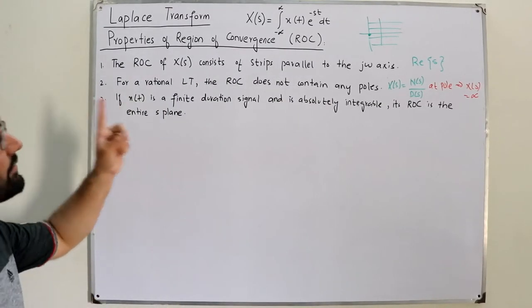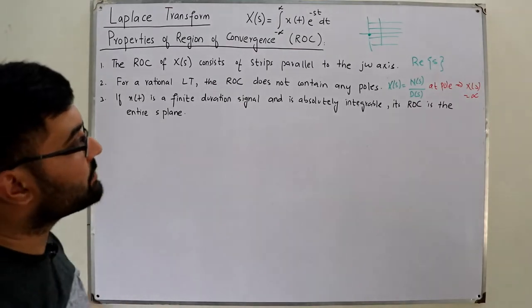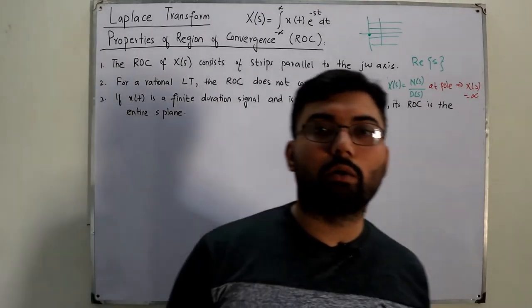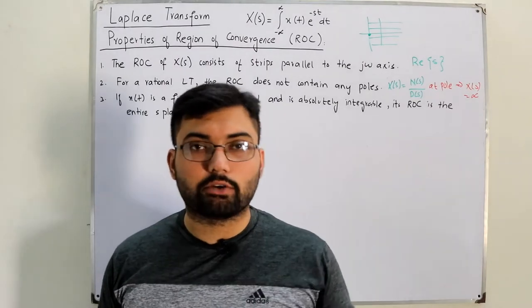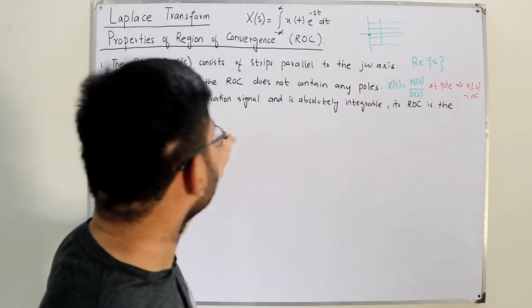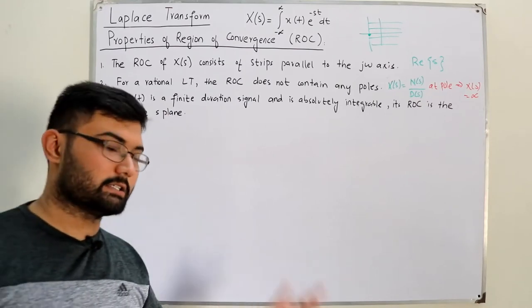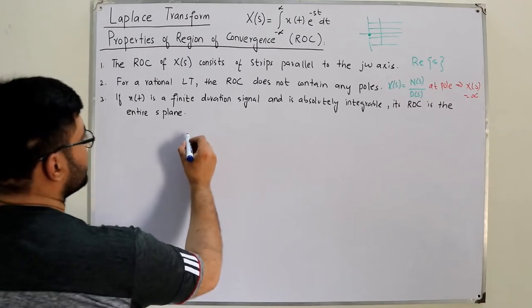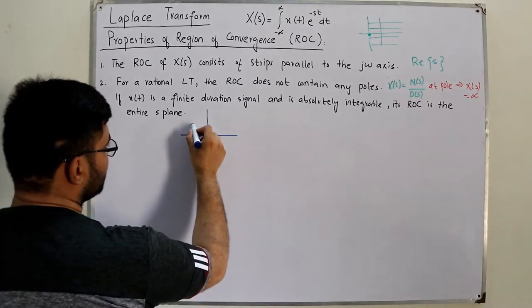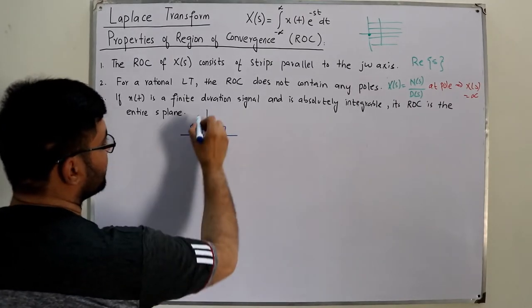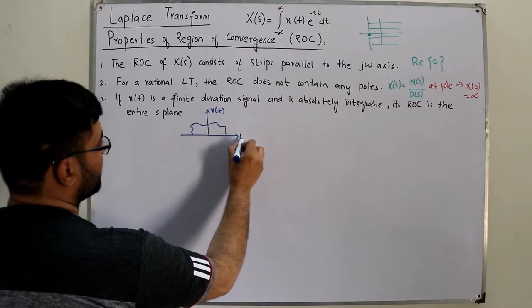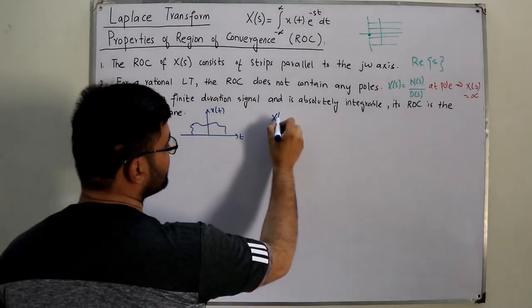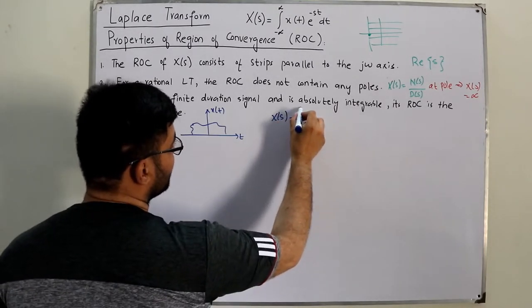Property number three: if x(t) is a finite duration signal and it is absolutely integrable, its ROC is the entire s-plane. We saw the impulse signal — the ROC was the entire s-plane. To see a general picture, let's say we have a general finite duration signal x(t). Finding the Laplace transform, we write x(s) as an integral from negative infinity to positive infinity.